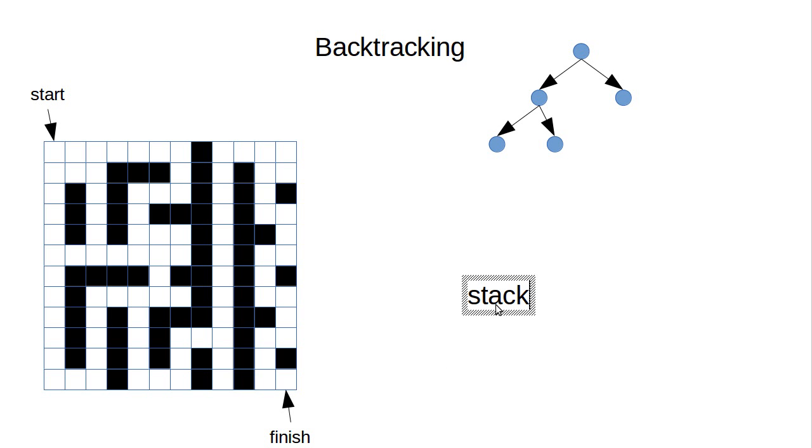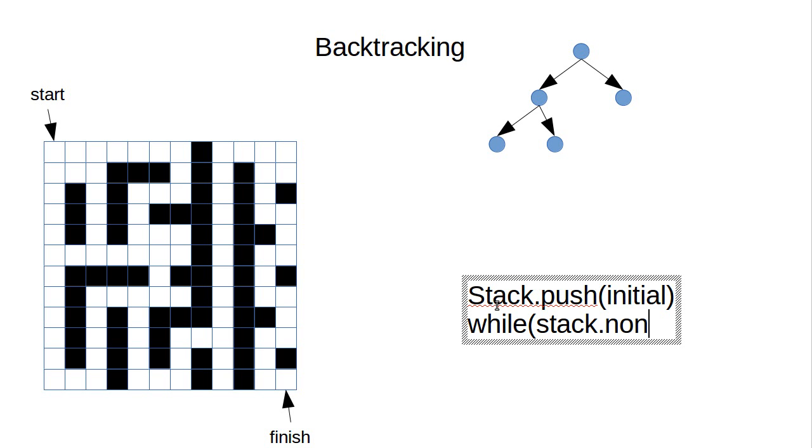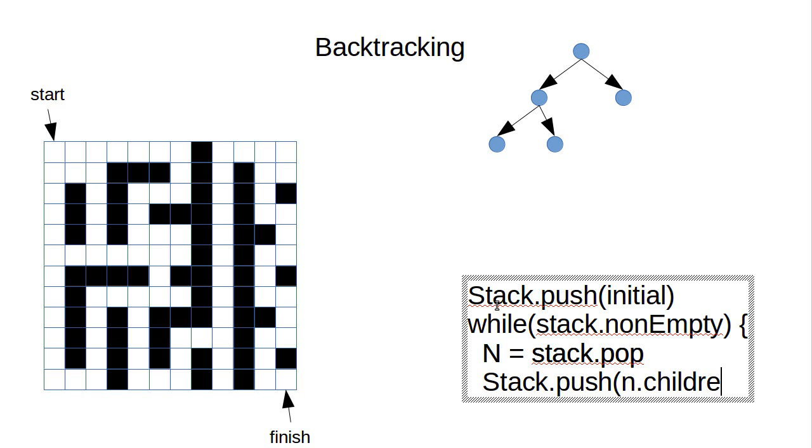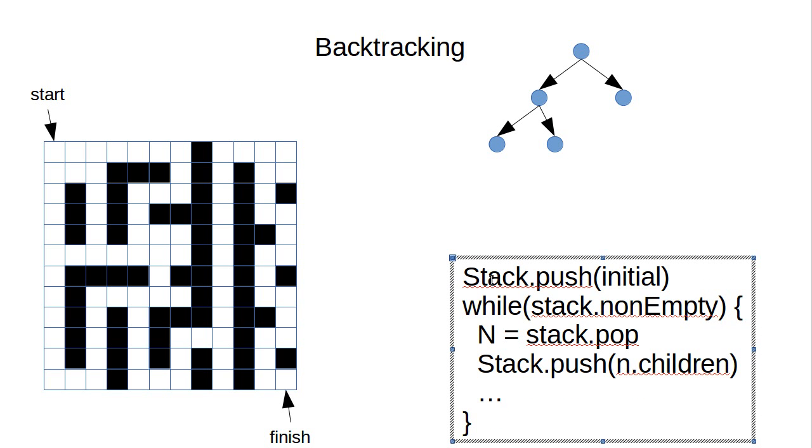And you can do something like stack.push of the initial case and then while stack not empty. I'm writing this in pseudocode, we make some variable. I'll call it n equals stack.pop. And then I would run through and stack.push n's children. Then do whatever processing it was that I needed to do to check to see if I had gotten to a solution. And so because this is using a stack and the objects come off in a LIFO ordering so that the last thing in is the first thing out, it would wind up going down to a child and going to a child and going to a child before it went to the siblings.